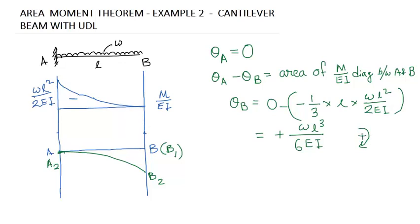Now what does the slope theta B indicate? If you draw a tangent here, this angle is theta B. It is clockwise. According to our calculation it is positive, so it is clockwise.